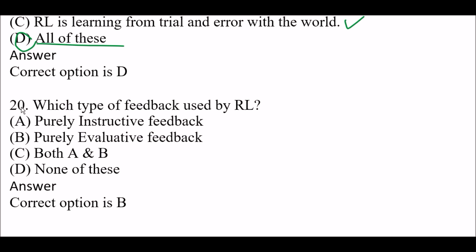Which type of feedback is used by RL? Option A: Purely instructive feedback. Option B: Purely evaluative feedback. Option C: Both A and B. Option D: None of these. Right answer is Option B — purely evaluative feedback.